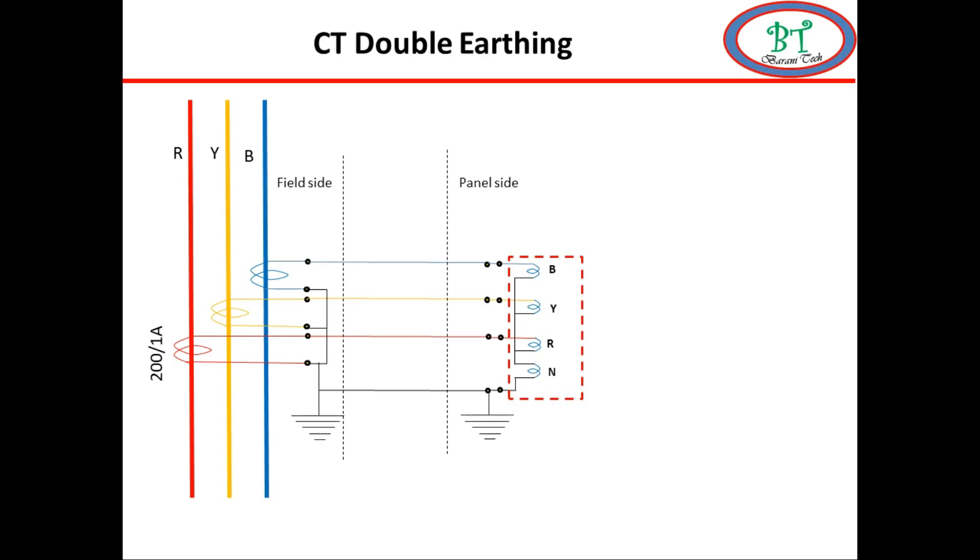During normal running condition the current on three phases balance. Let us consider 100 amps on each phase. According to CT ratio the secondary side will produce 0.5 amps. And the neutral side current will be 0. We are considering the earth fault production is taken from the neutral side current.